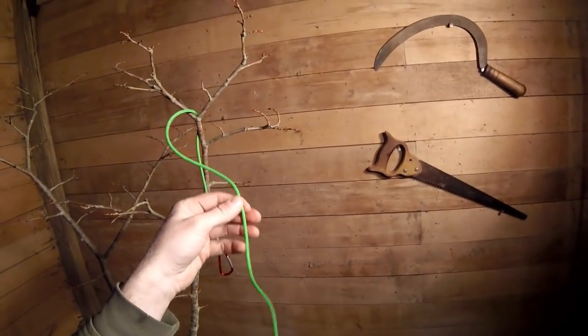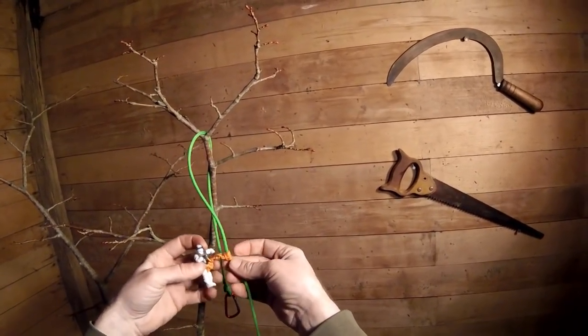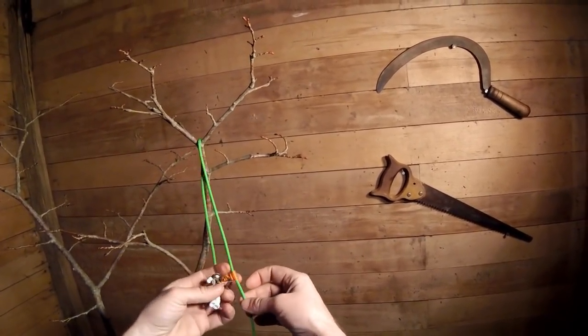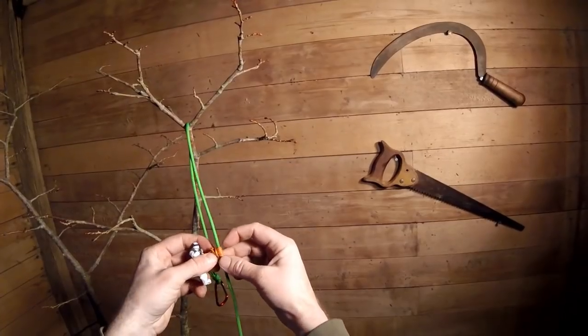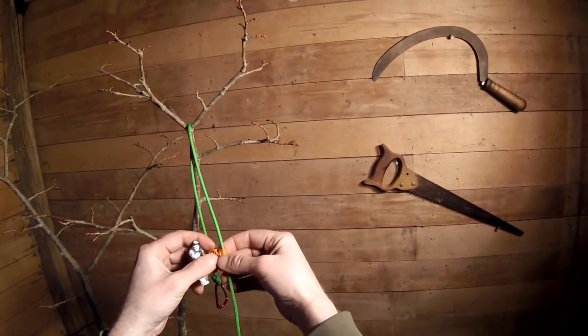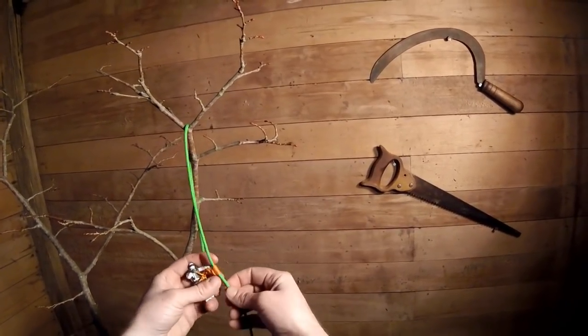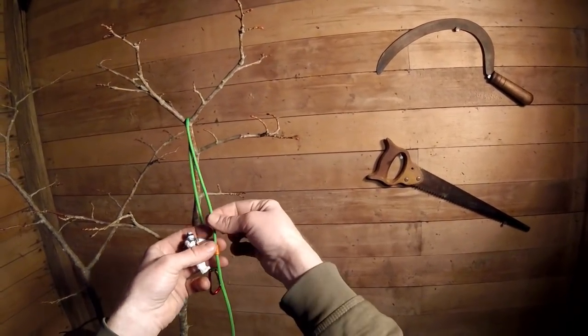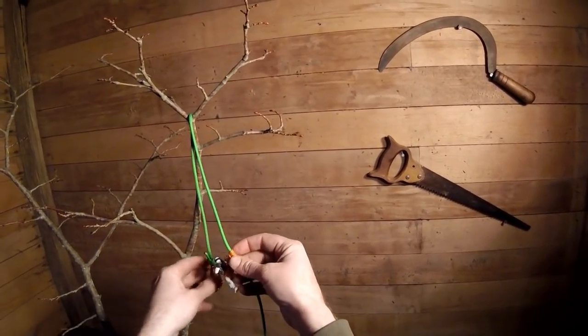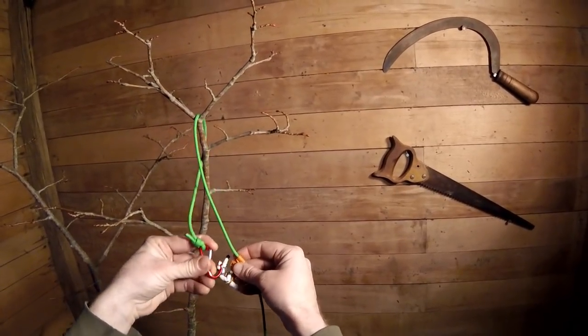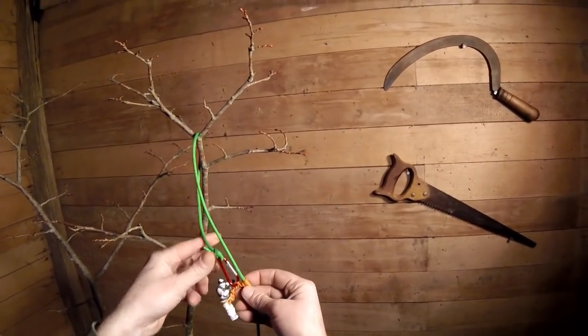So now we have a terminal end and we have a working end. On the working end, we take our climber. Our climber has a harness or a saddle, and then they have some form of attachment to the working end of the line. In this case, and more traditionally, it would be a hitch cord like this. You can also use mechanical devices to get the same effect. This climbing setup, whether it's a hitch cord or a mechanical device, allows a climber to move up and down the rope. So in doubled rope, moving rope, we take the terminal end and we attach it directly back to the climber's saddle.